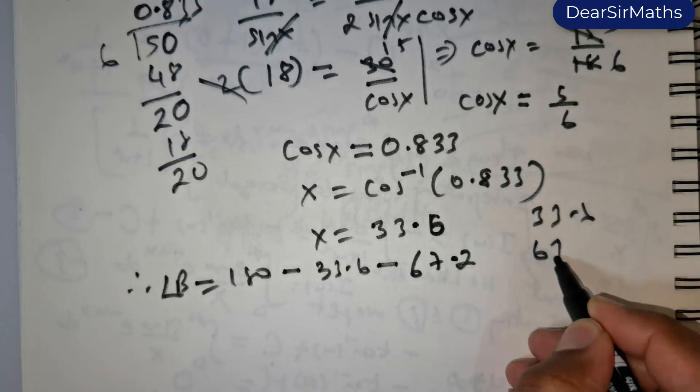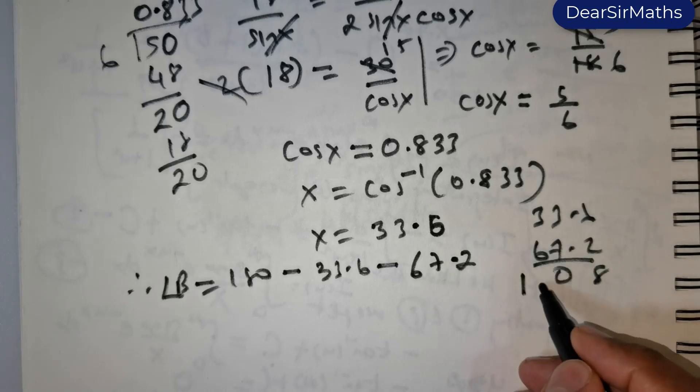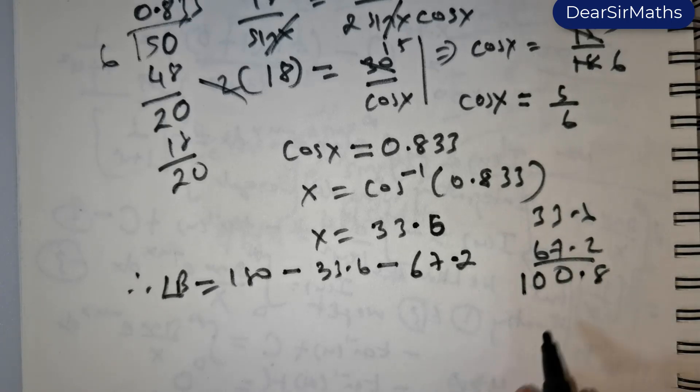33.6, 67.2, 8, 10, 1, and that is going to be 10. So 100.8.